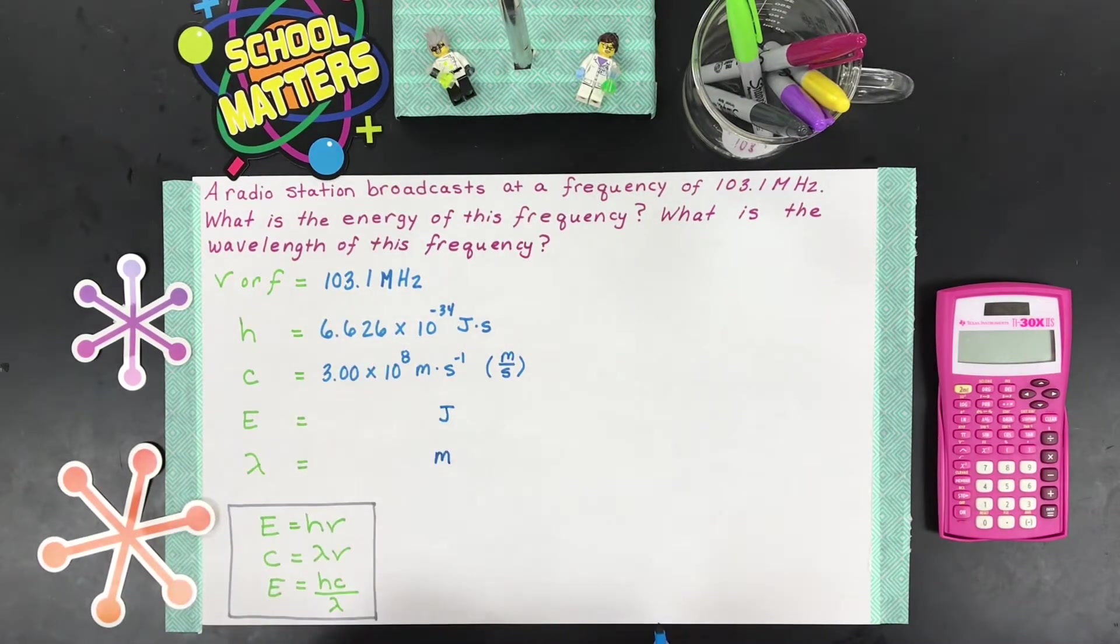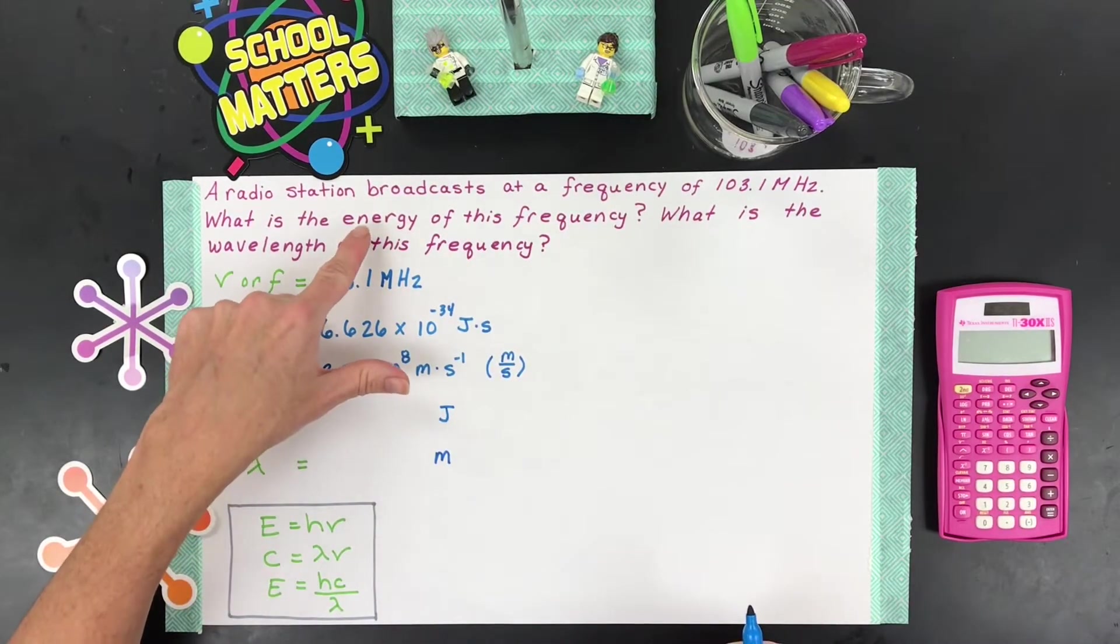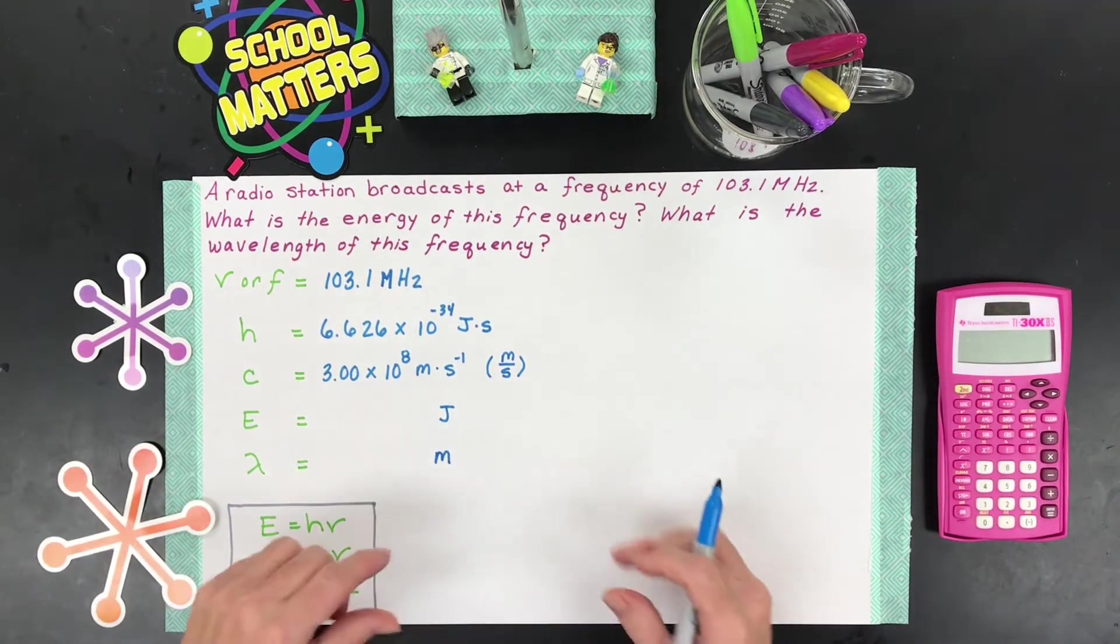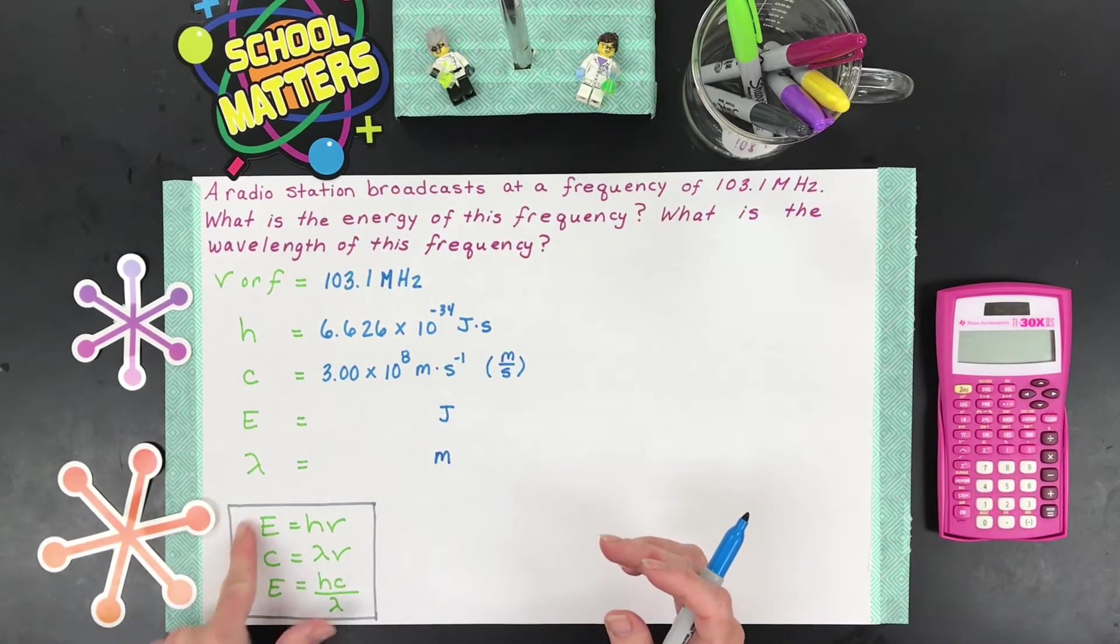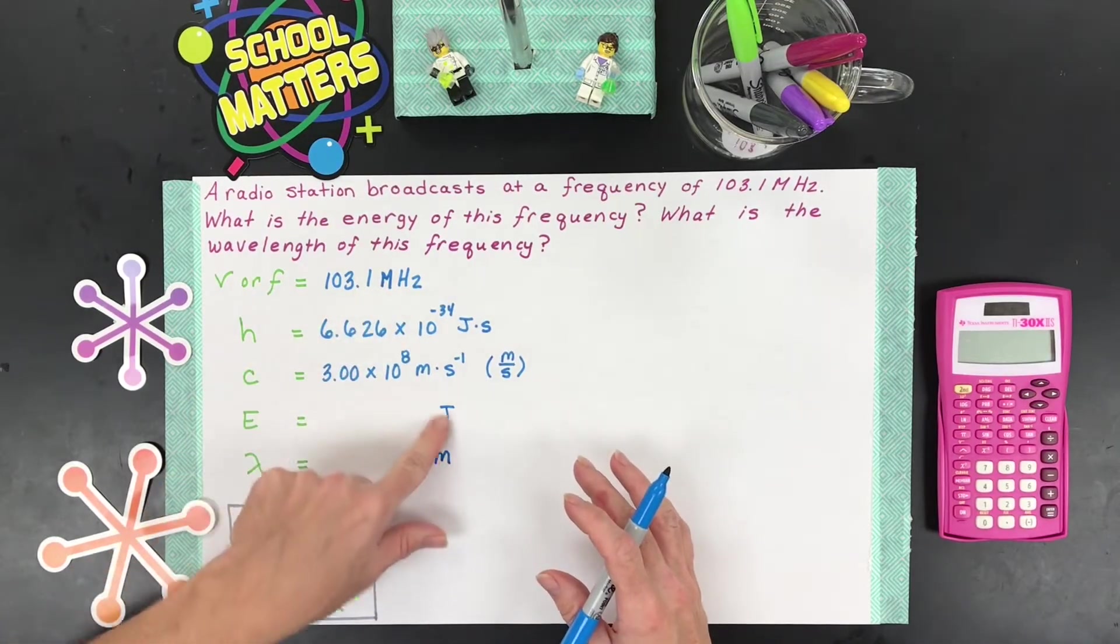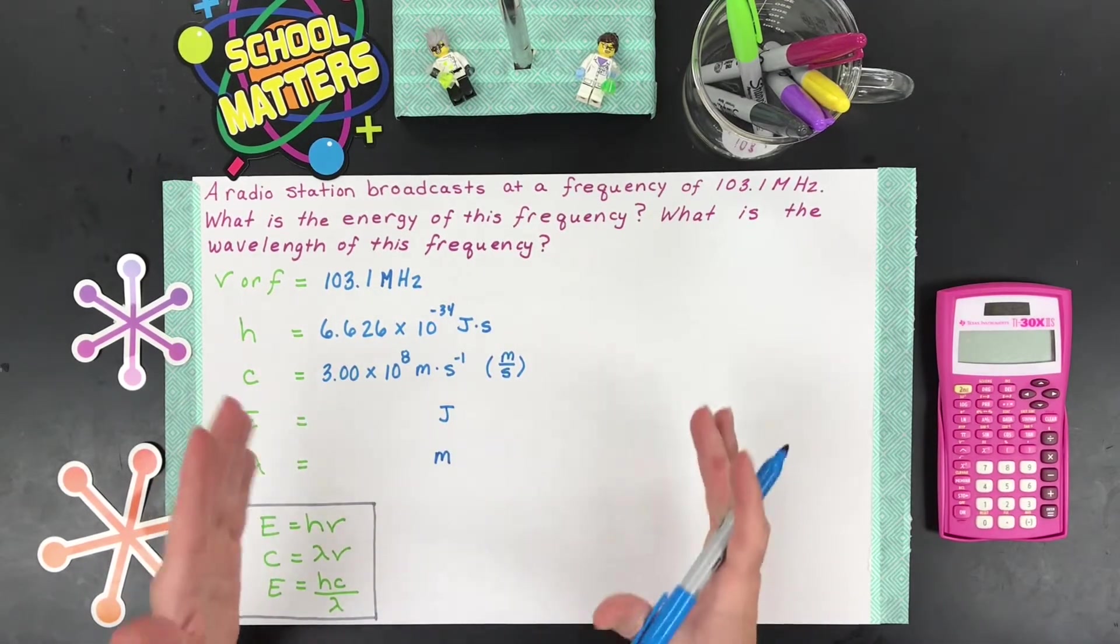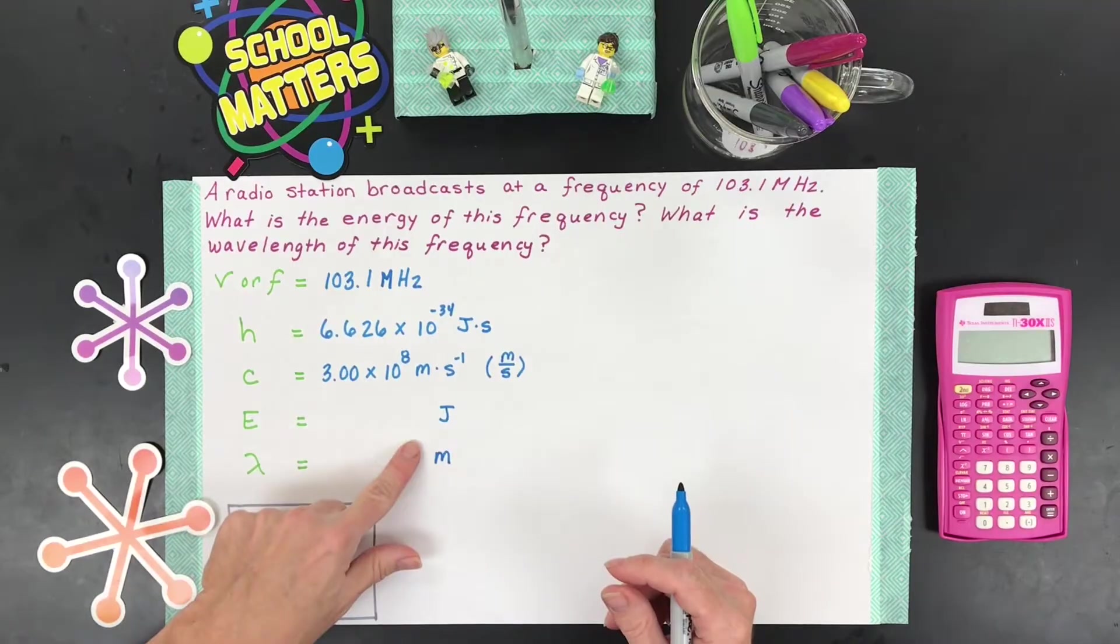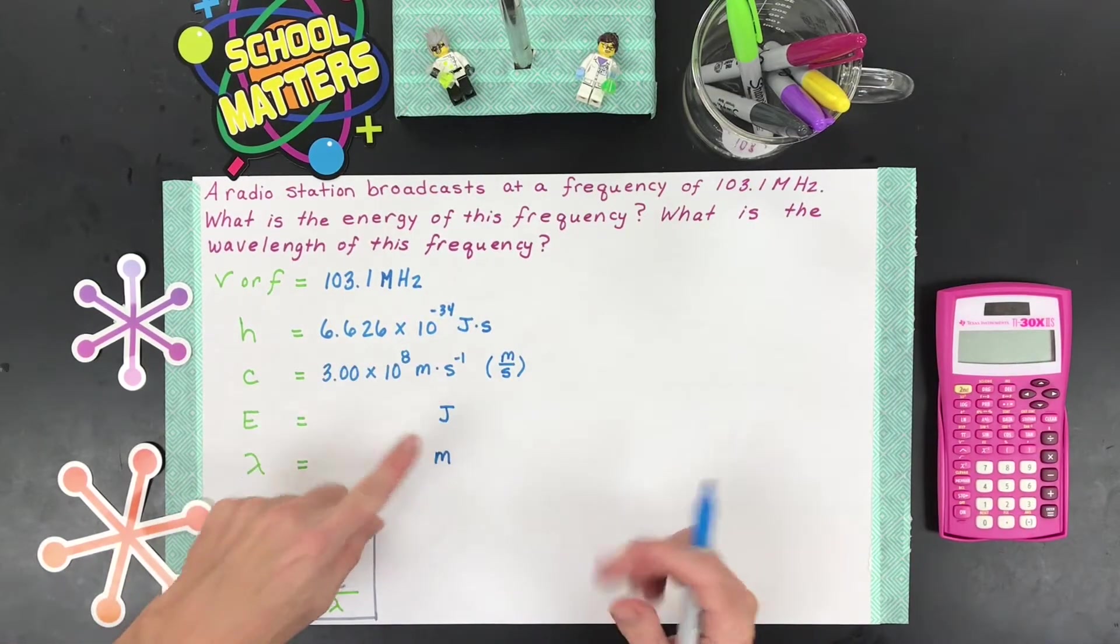All right, so we've listed everything that we know, and one of these equations is going to be a match for calculating energy, and one's going to be a match for calculating wavelength. The other thing you can do, if you're ready, you can work independent of equations, as long as you know how to convert your units. So that's the most important thing, is to get all these units to match. So joules, seconds, and meters are great.